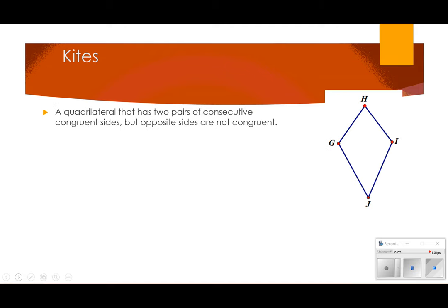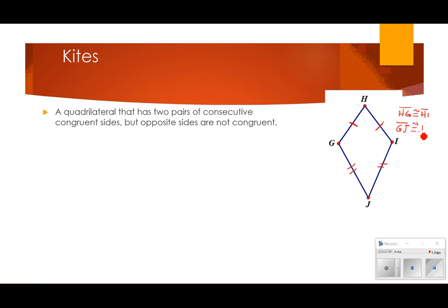A kite is a quadrilateral that has two pairs of consecutive congruent sides, but opposite sides are not congruent. So HI is congruent to HG, and IJ is congruent to GJ — meaning HG is congruent to HI, and GJ is congruent to IJ.